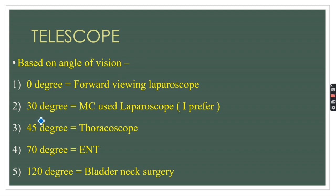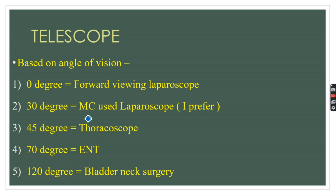Based on angle of vision, the telescope can be divided into: zero-degree (also known as forward-viewing or straight laparoscope), 30-degree (the most commonly used — preferred in most minimal access surgeries), 45-degree (commonly used as thoracoscope, with more range of movement), 70-degree (used in ENT endoscopy, including various diseases of the larynx), and 120-degree (used for bladder neck surgery).